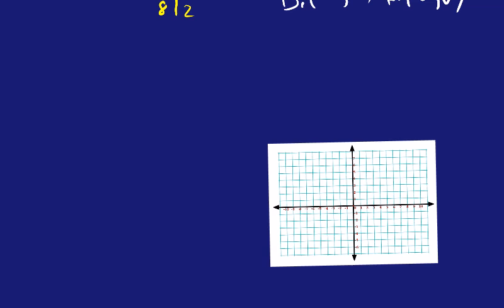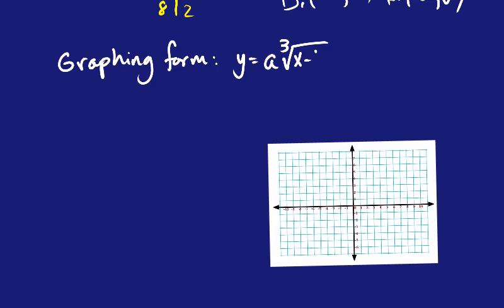So let's go with the graphing form first. Your graphing form will look like this: y equals a, the cube root of x minus h, and then plus k. So the middle of the graph, the middle point, can be found by figuring out what h and k are. And that will be your center point of that graph, where 0, 0 was on the first graph. And then you'll have to find more points by hand, figuring out perfect cubes. And so let's give it a shot.